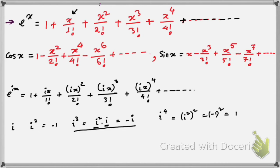And i to the power 5 is i to the power 4 times i. Since i to the power 4 is plus 1, it remains i again, and so on.